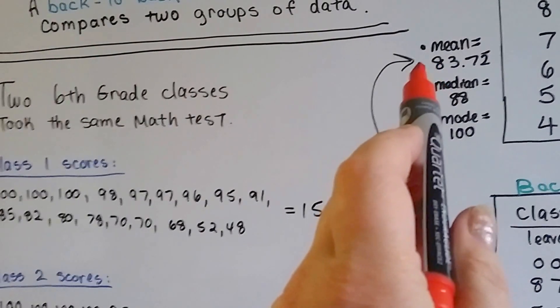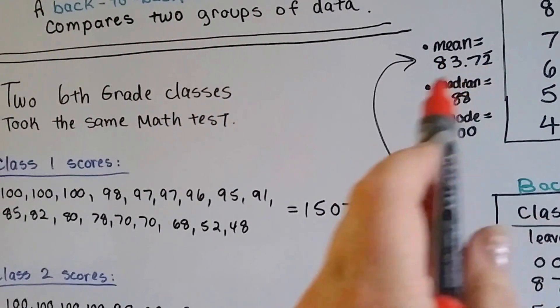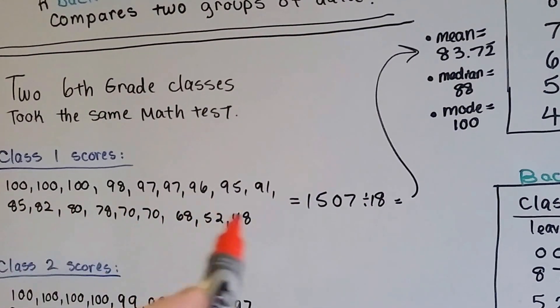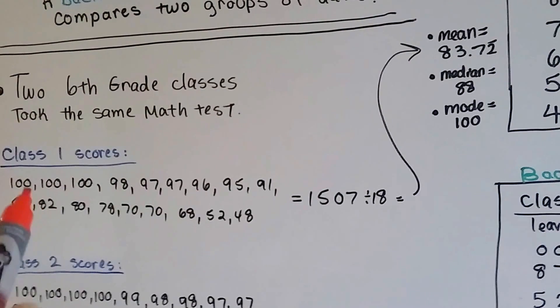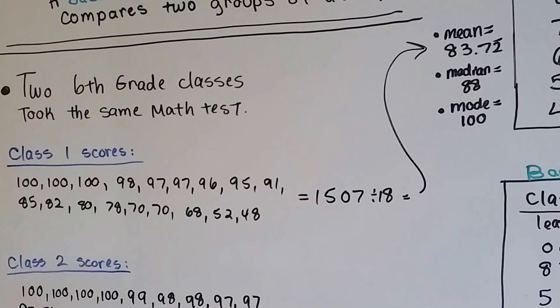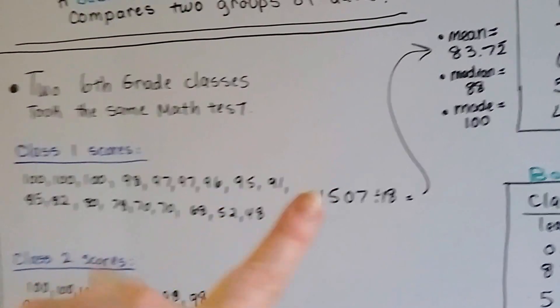the average. The average test score was 83.72. The median is the middle number. If there's 18 scores, we counted nine in on each side until we got to the middle score.